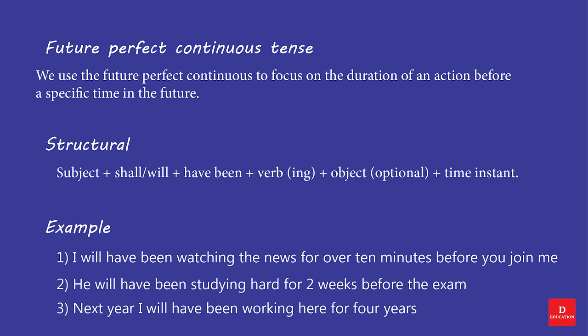Future Perfect Continuous Tense. We use the Future Perfect Continuous to focus on the duration of an action before a specific time in the future. Structure: Subject + shall/will + have been + Verb (-ing) + Object (optional) + Time instant. Examples: I will have been watching the news for over 10 minutes before you join me. He will have been studying hard for two weeks before the exam. Next year I will have been working here for four years.